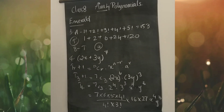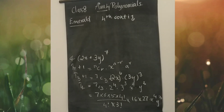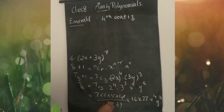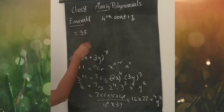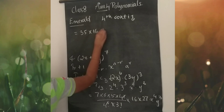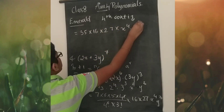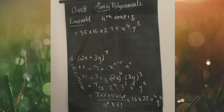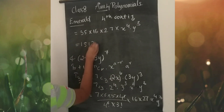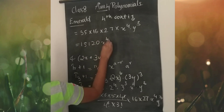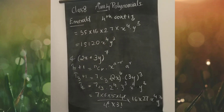After solving and simplifying, you will get 35 into 16 into 27 into x^4 y^3. Next it becomes 15,120 x^4 y^3, and the option is B.